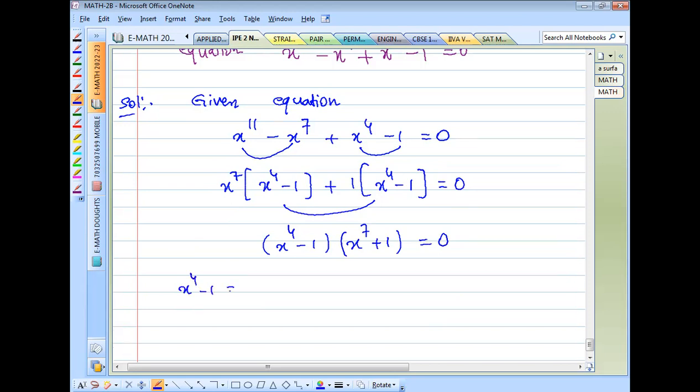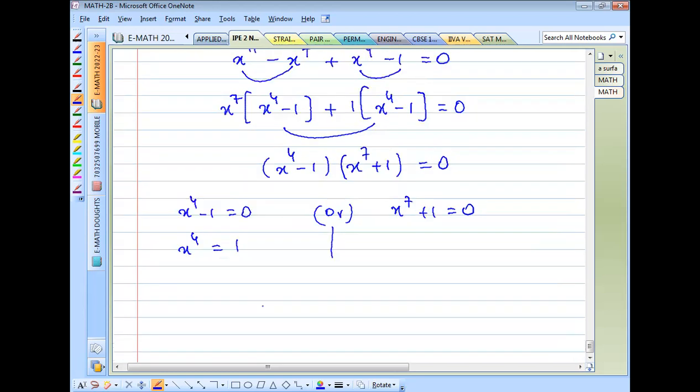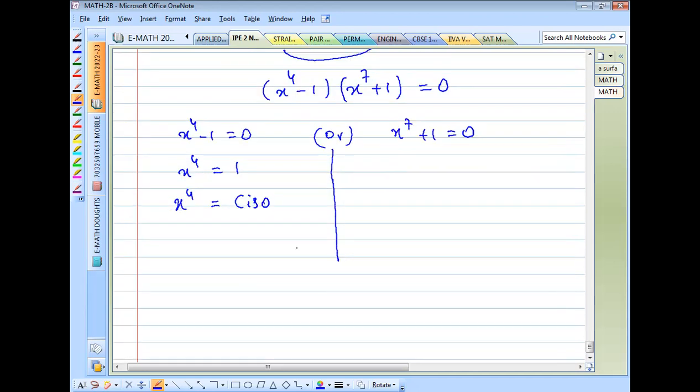Factoring gives us x power 4 minus 1 times x power 7 plus 1 equal to 0. So either x power 4 minus 1 equal to 0, or x power 7 plus 1 equal to 0. From the first case, x power 4 equal to 1. From the second case, x power 7 equal to minus 1.